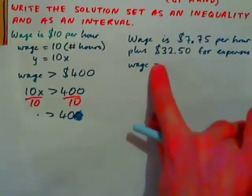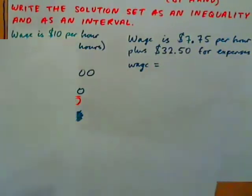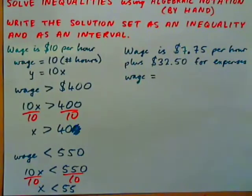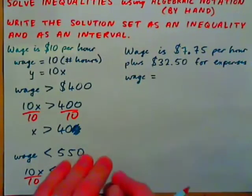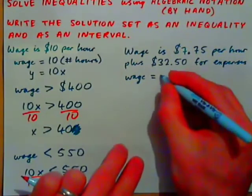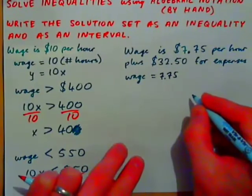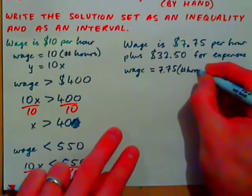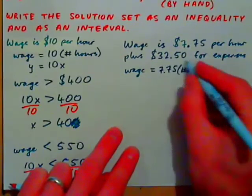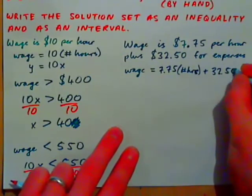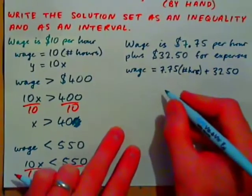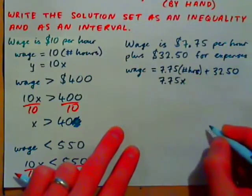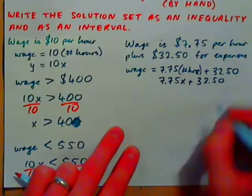What if your wage is $7.75 per hour plus $32.50 for expenses — say, for commuting or lunch? Your wage would be $7.75 times the number of hours you work, plus a bonus of $32.50. So if x is the number of hours, your wage is 7.75x plus 32.50.